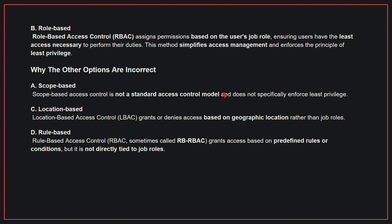Why the other options are incorrect: A, Scope-based — scope-based access control is not a standard access control model and does not specifically enforce least privilege. C, Location-based — location-based access control grants or denies access based on geographic location rather than job roles. D, Rule-based — rule-based access control grants access based on predefined rules or conditions but is not directly tied to job roles. Therefore, the correct answer is B: Role-based.